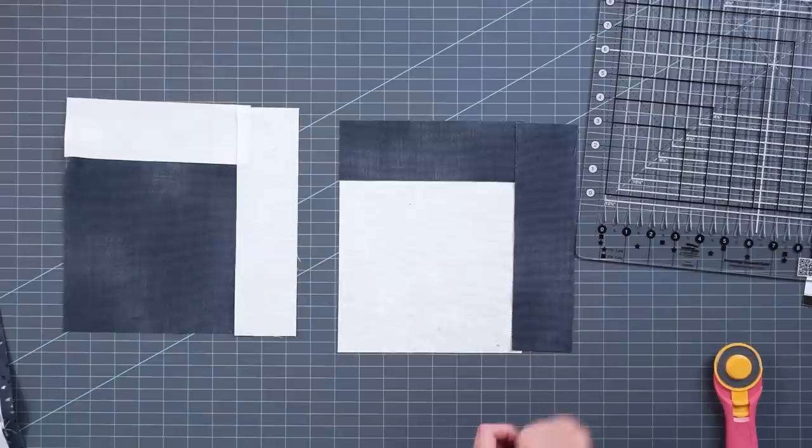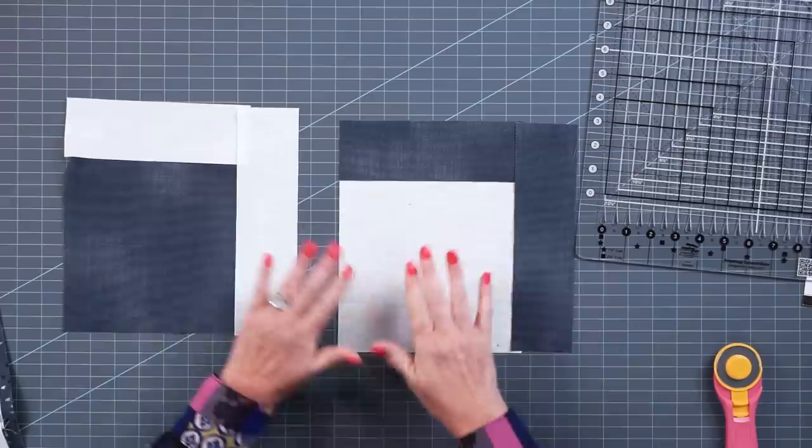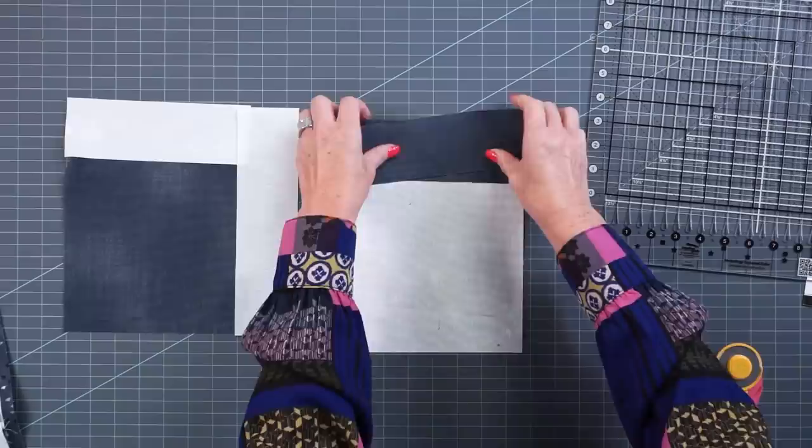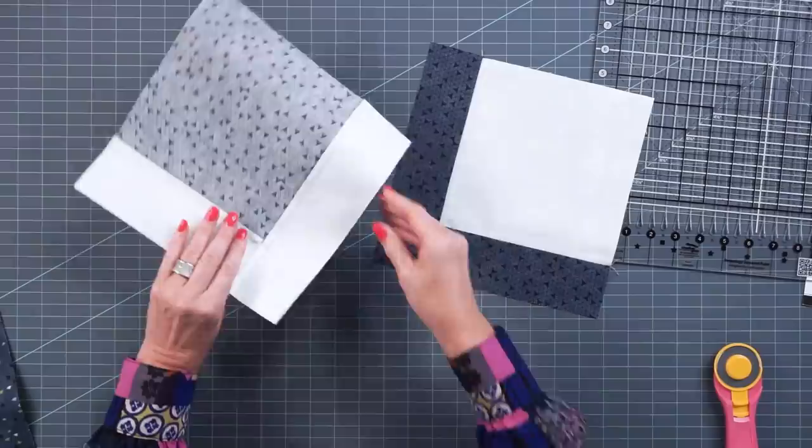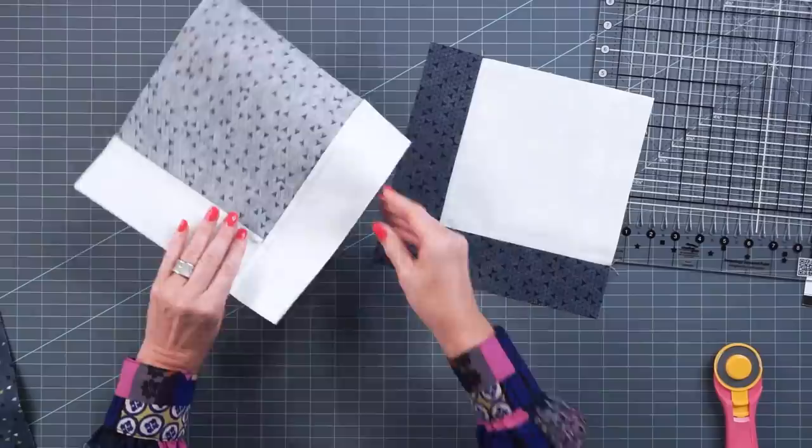We're going to be pressing these towards the darker fabric so that you will have opposite pressing. I always include pressing instructions in my patterns because it just makes things come together so much easier. So now I have here two units that are mirror image and they are pressed opposite. We can lay them on top of each other and those seams will nest perfectly.